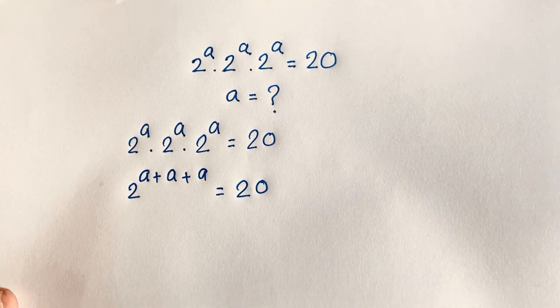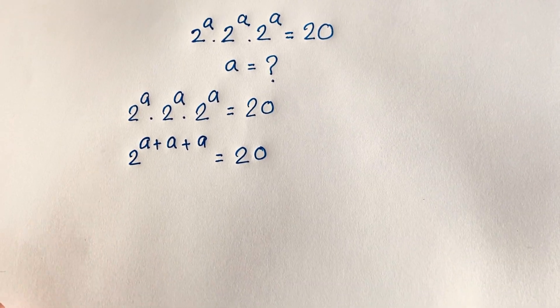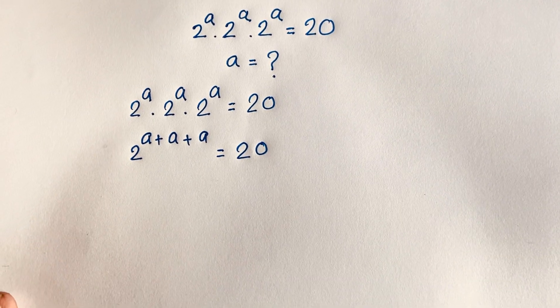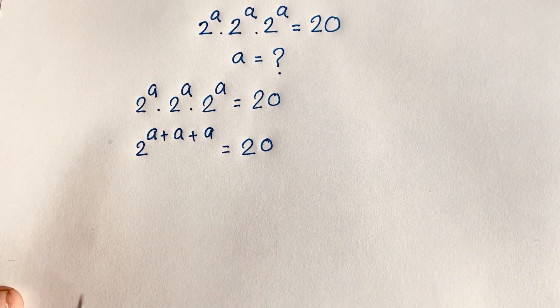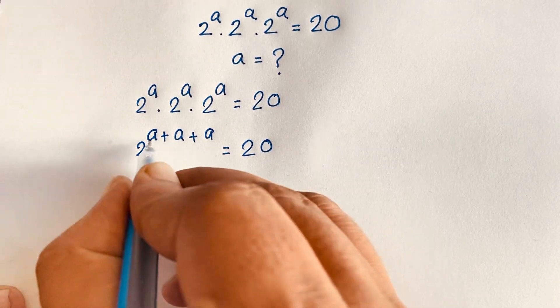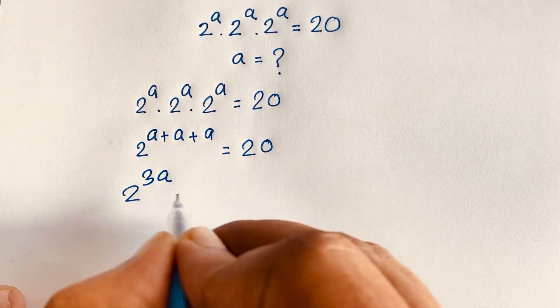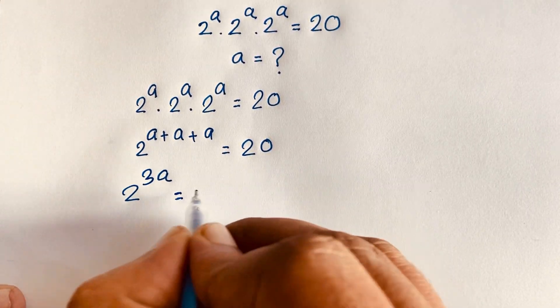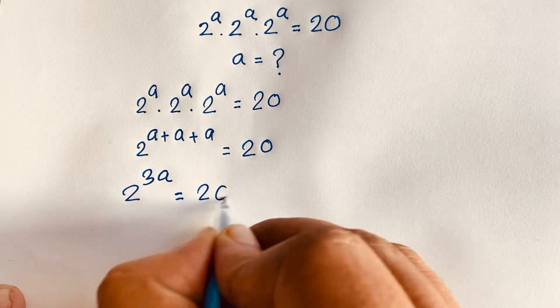Now I can see easily here is 2 to the power 3A, because A plus A plus A equals 3A, so we have 2 to the power 3A is equal to 20.